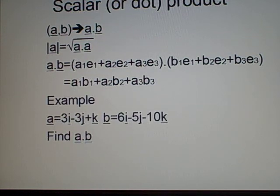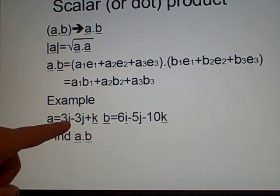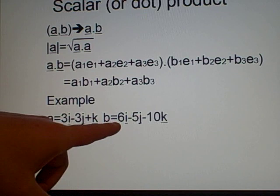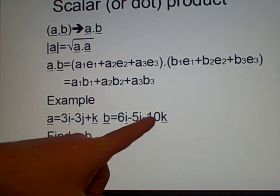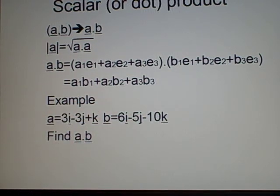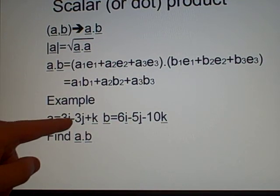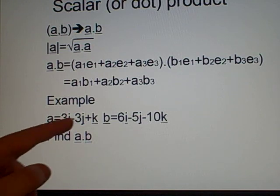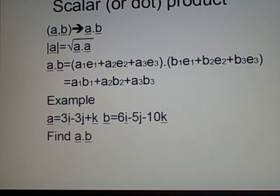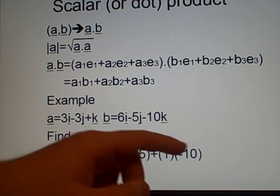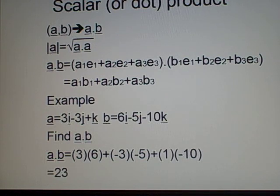Now we've got an example, which is, I've used the i, j, and k here for the basis vectors. So we have a is 3i minus 3j plus k, b is 6i minus 5j minus 10k. And we want to find a dot b. So all we do is we get 3 times 6 plus minus 3 times minus 5 plus 1 times minus 10. Yep. And that will give us the answer 23. You have done it correctly.